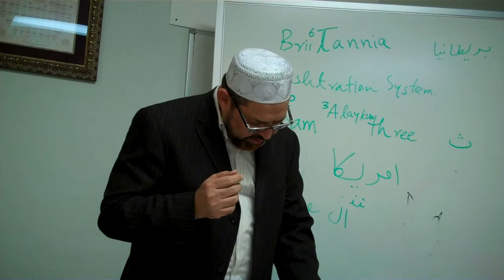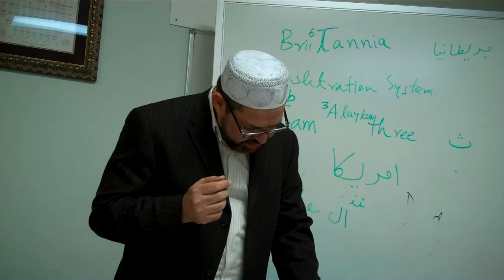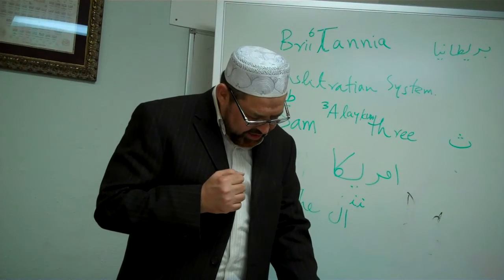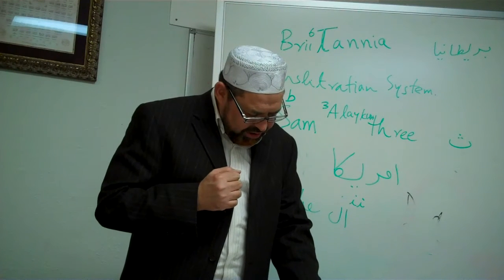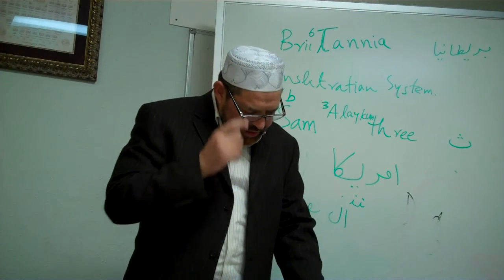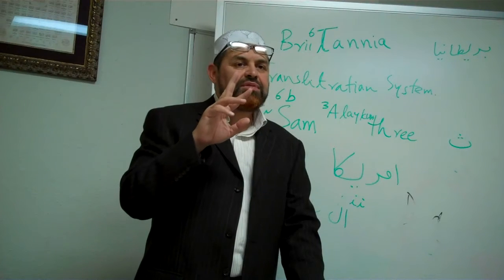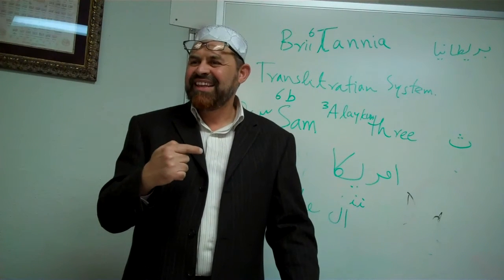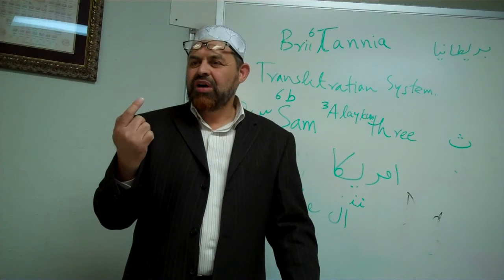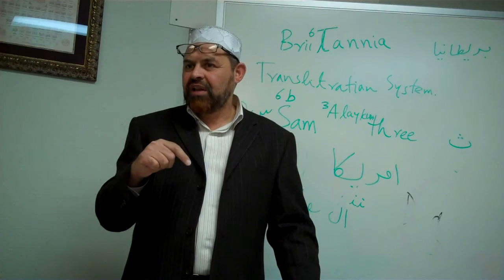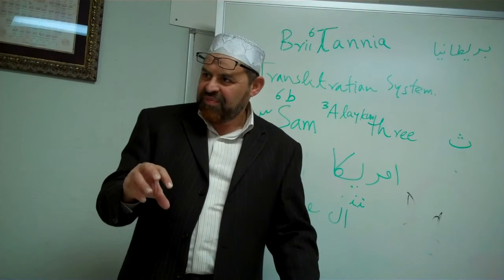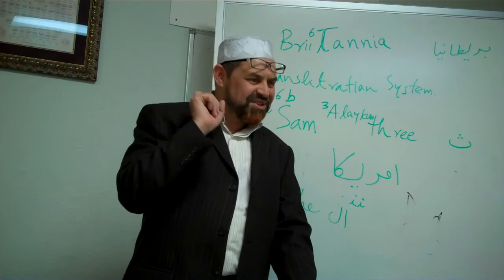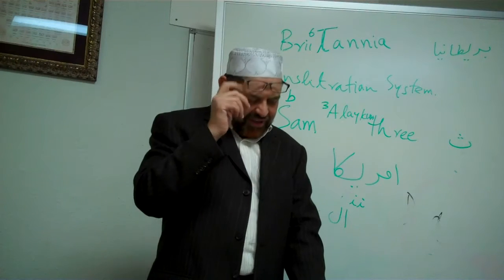Then we have Somalia — Mogadishu is the capital. Then we have Jordan, with the capital Amman. Now, do not be confused — one is Amman and one is Oman. Amman is the capital of Jordan. Oman is a country, and the capital of Oman is Muscat. So these are two different countries.